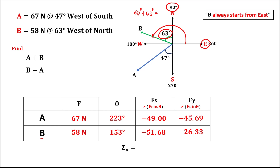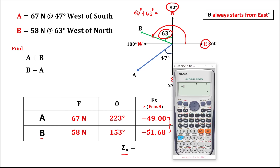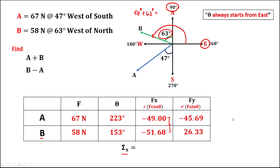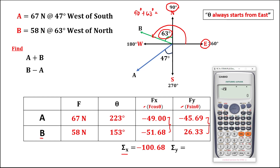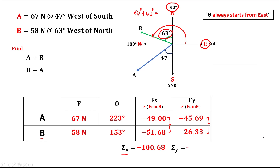We need to find the summation of the x-components by adding all these numbers. The summation of x is negative 49 plus negative 51.68, which equals negative 100.68. Then find the summation of the y-components: negative 45.69 plus 26.33 equals negative 19.33.